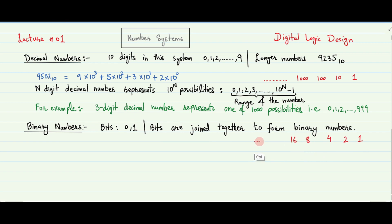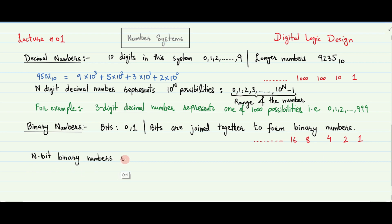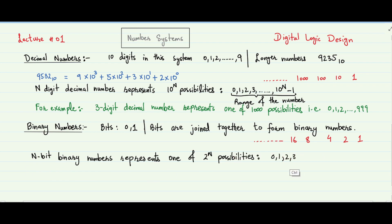Each column of a binary number has twice the weight of the previous column, so binary numbers are base 2. In binary, the column weights from right to left are 1, 2, 4, 8, 16, 32, and so on. An n-bit binary number represents 1 of 2 raised to power n possibilities, that is 0, 1, 2, 3, and so on up to 2 raised to power n minus 1.